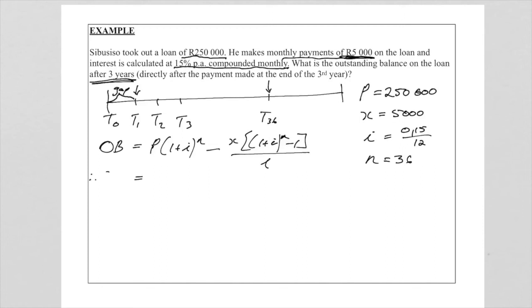So now we substitute outstanding balance. The P, the initial amount, was 250,000, so it's 250,000(1 + 0.15/12)^36 minus x which is my monthly payment and that is 5,000[(1 + 0.15/12)^36 - 1]/(0.15/12). Now it looks quite impressive but quite easy because you can put all of this at once on your calculator and make sure that you use your brackets and your fraction buttons on the calculator to avoid making mistakes.